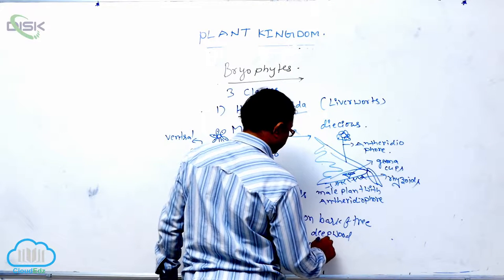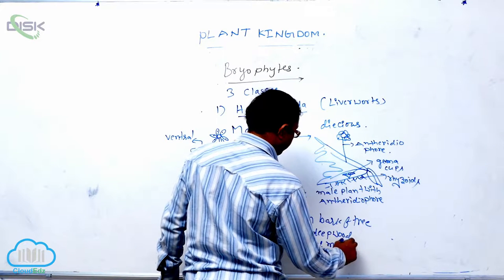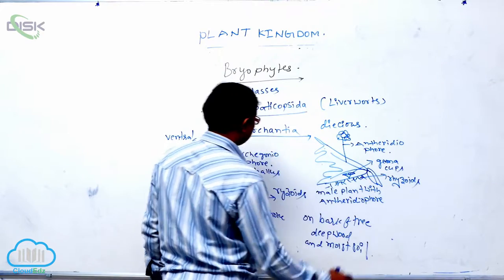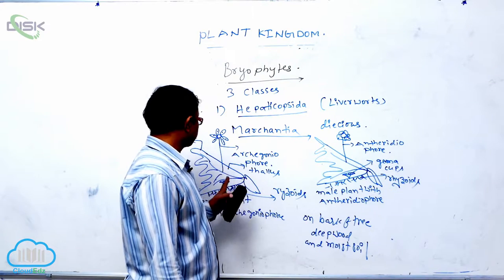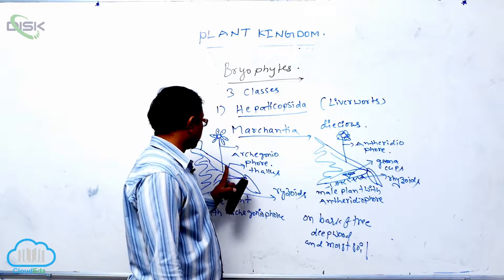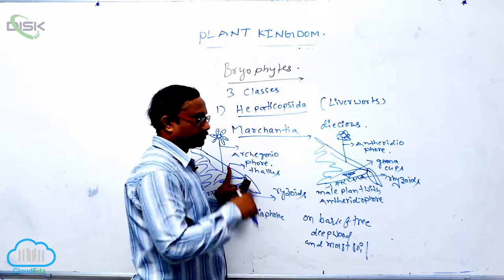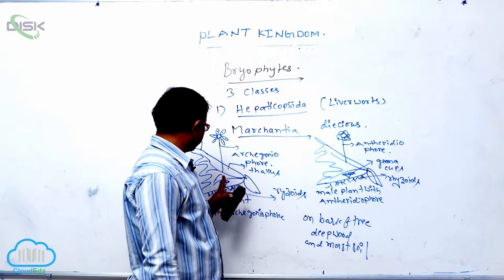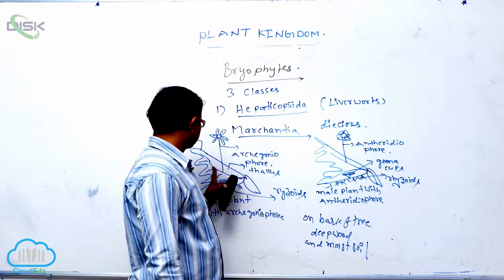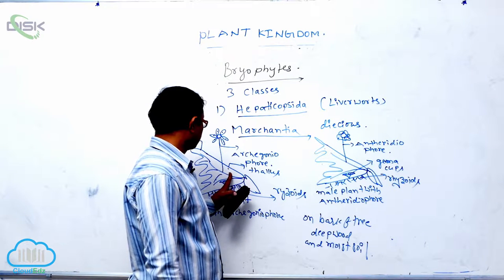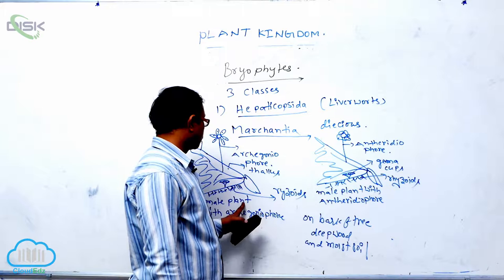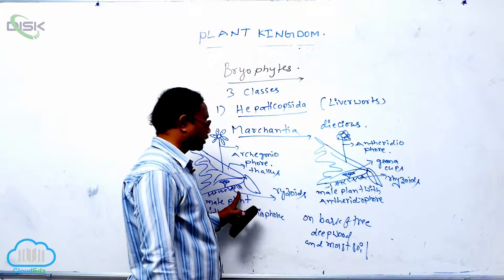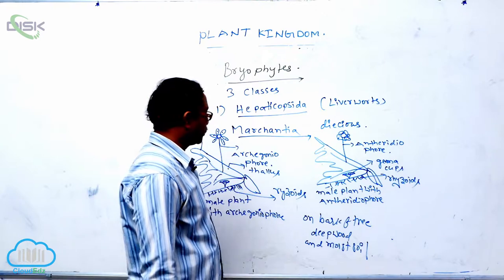Marchantia is grown in moist soil, and its plant body is made up of parenchyma tissue. At the ventral side, the reproductive organs are present. At the dorsal side, unicellular rhizoids are present, by which Marchantia is attached to the substratum.